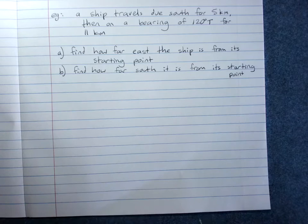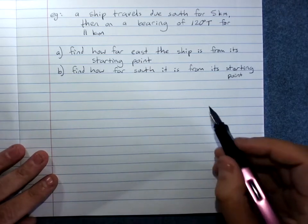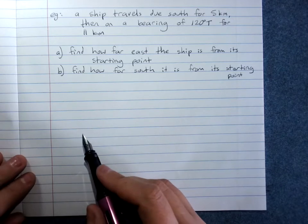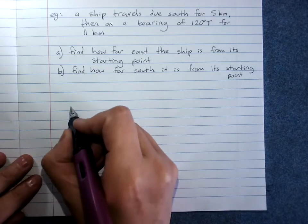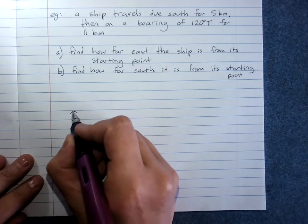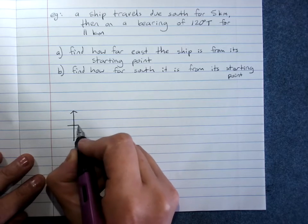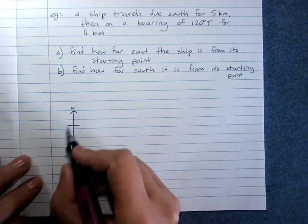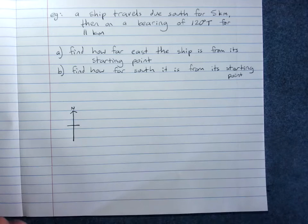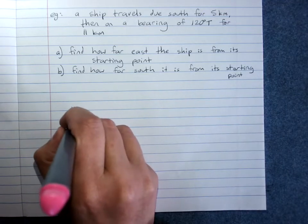A, find how far east the ship is from its starting point. Any time you get these questions, you must draw a diagram and you must start with a compass rose. It can be a very simple one like this, where north is marked. And your starting point is at the centre of your compass rose.